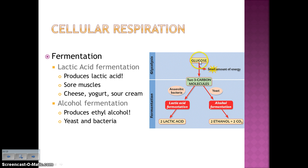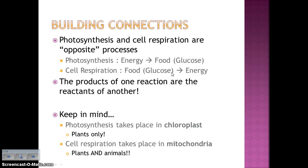So you have glucose broken down in glycolysis. If oxygen is unavailable, you go into fermentation. If oxygen is available, you go into aerobic cellular respiration, which produces lots of energy. Now let's talk about the connections between photosynthesis and cellular respiration — remember, these are basically opposite processes. The products of one reaction are the reactants of the other — that's what it means to say they are opposite processes.